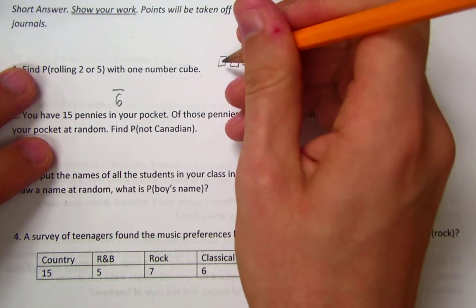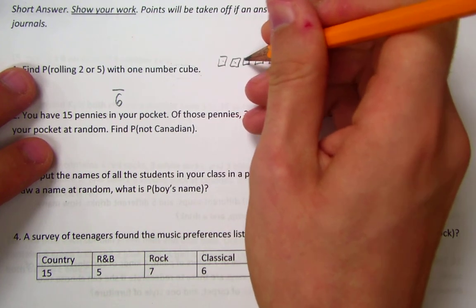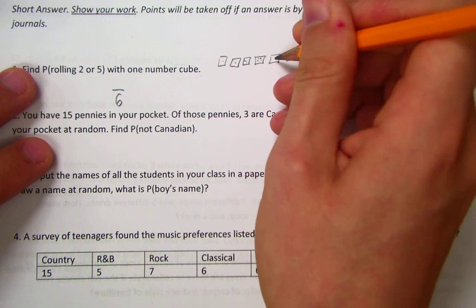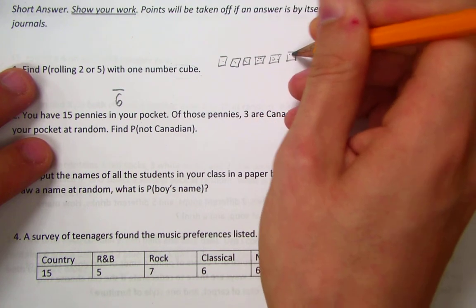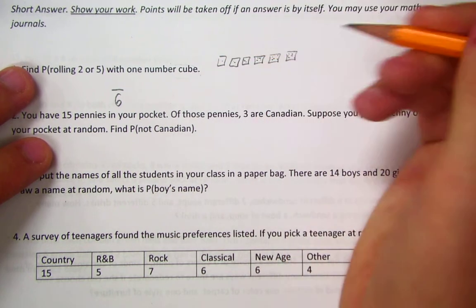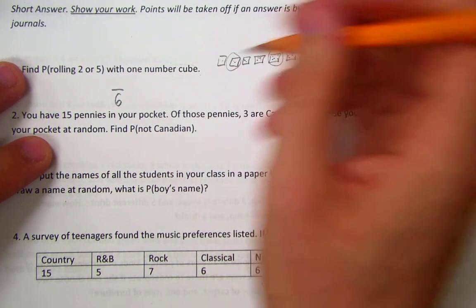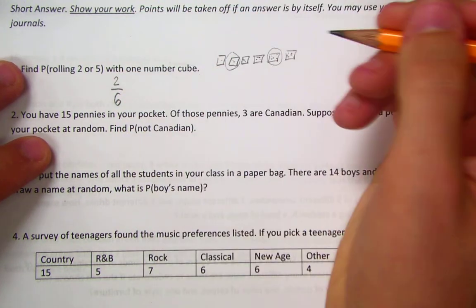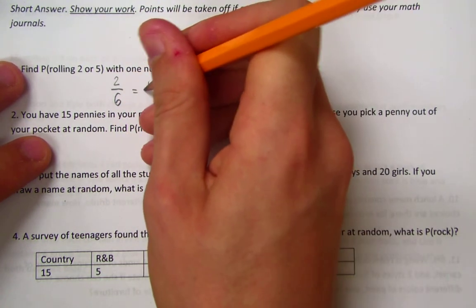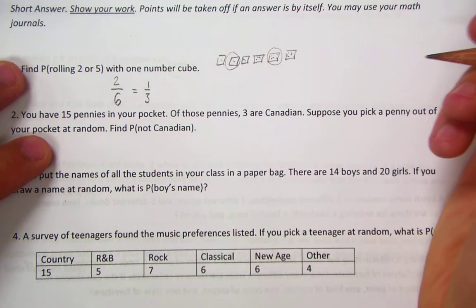Here are my 6 outcomes. I can get a 1, 2, 3, a 4, a 5, or a 6. How many ways can I get a 2 or a 5? Well, I can get one here and one here, so 2 out of 6. I'm going to reduce that to 1 out of 3. You didn't have to reduce for this test.